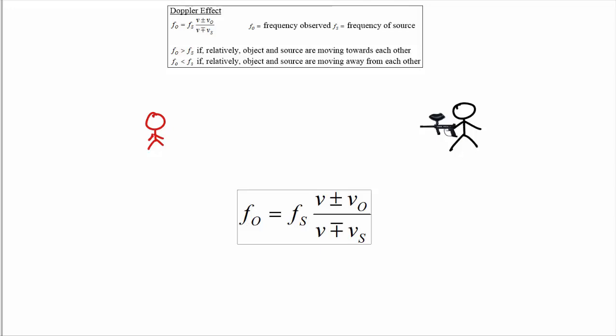We're going to use an example not involving light or sound to explain why this is. I've got a guy with a paintball — it's your friend — and there's you in red on the left. Your friend is going to start shooting paintballs in your direction at a rate of one per second. As long as you just sit there and don't move, you're going to get hit one per second. But if you run towards your friend, every successive paintball he fires travels a shorter distance to reach you, and you're going to get hit more frequently than one per second. The observed frequency is higher than the rate at which he's actually shooting the paintballs.